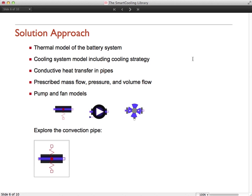To solve this design challenge, we'll need the following. We'll create a thermal model of the battery system. Construct a system with a cooling strategy. Pipes with conductive heat transfer. We'll provide mass flow, pressure and volume flow. And pump and fan models. All of this is available in System Modeler with the smart cooling library.